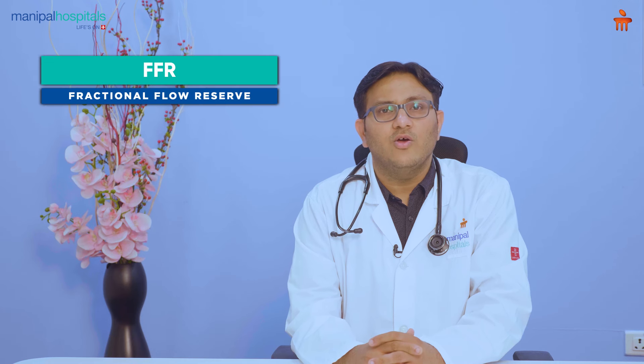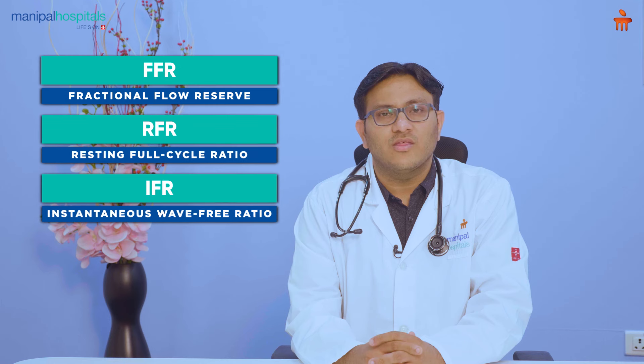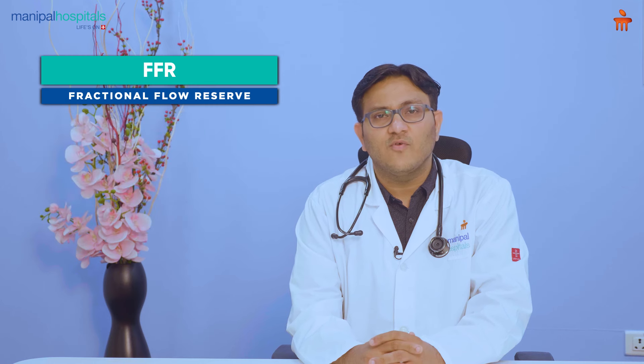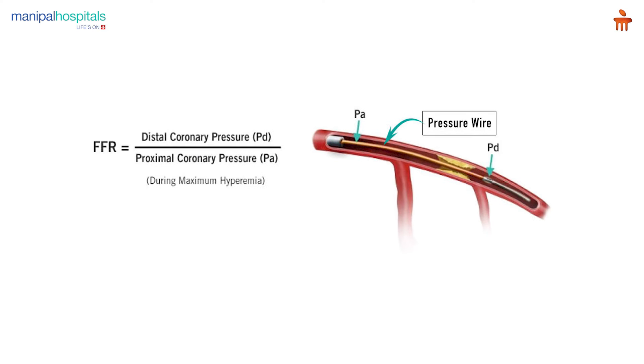Apart from imaging, one more physiological assessment is important, which is the use of FFR, RFR, or IFR. The most commonly used is FFR, that is the fractional flow reserve. An FFR is a pressure wire which is put across a blockage in borderline lesions — where somebody has a 50 to 70% blockage — to decide whether the block needs a stent or not.